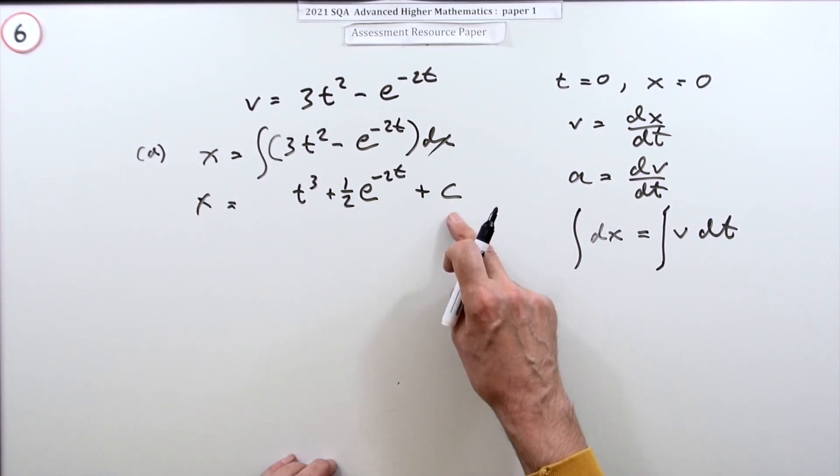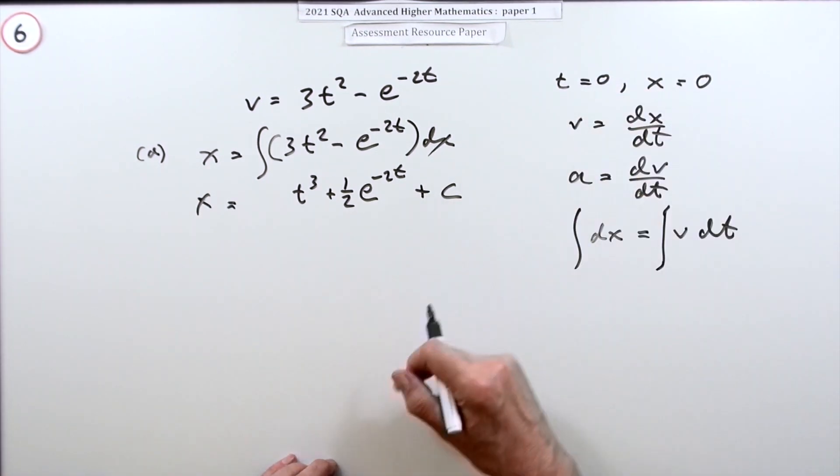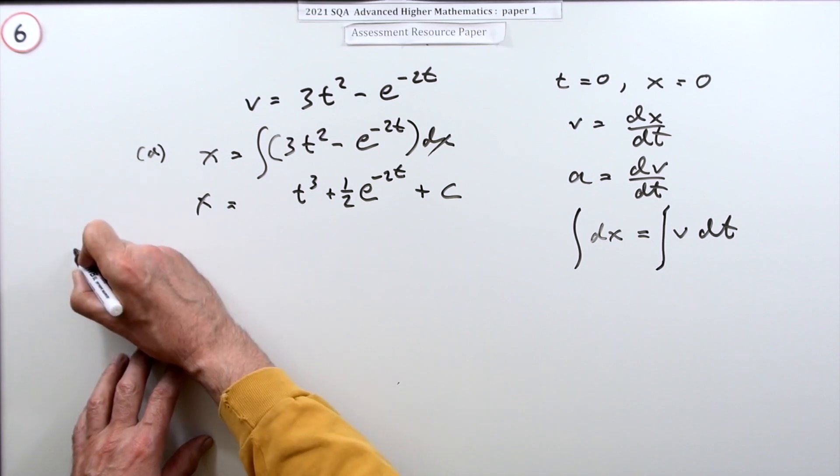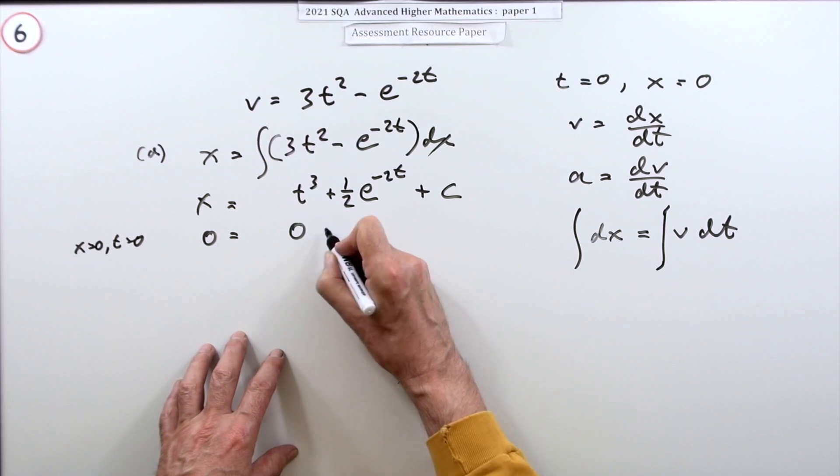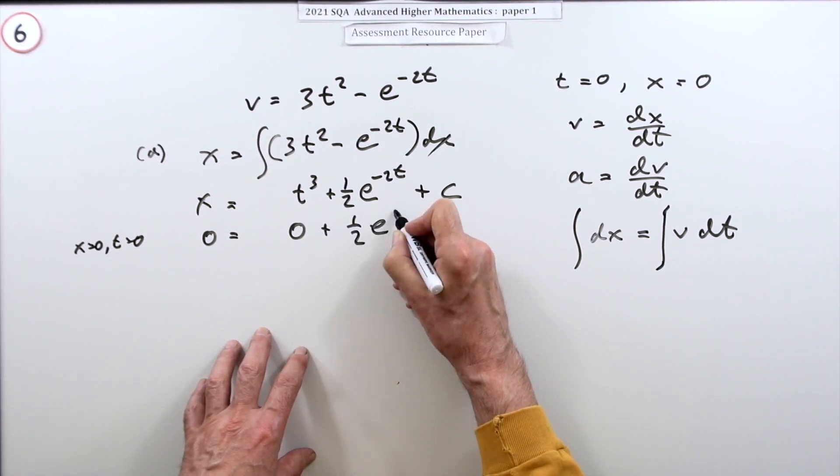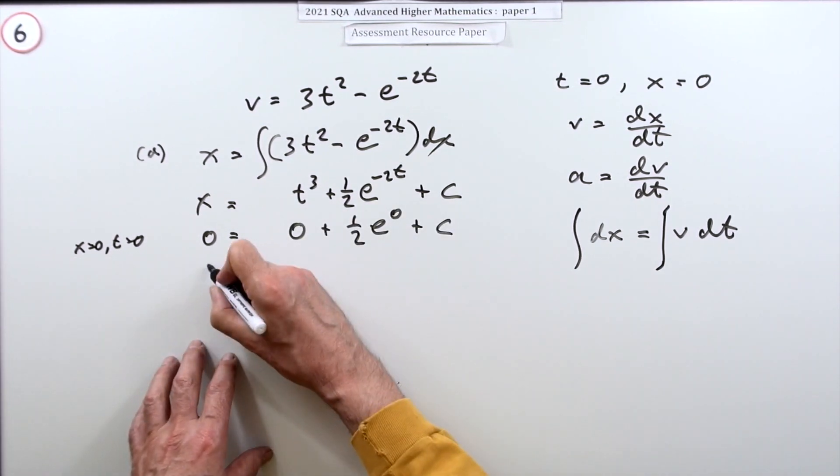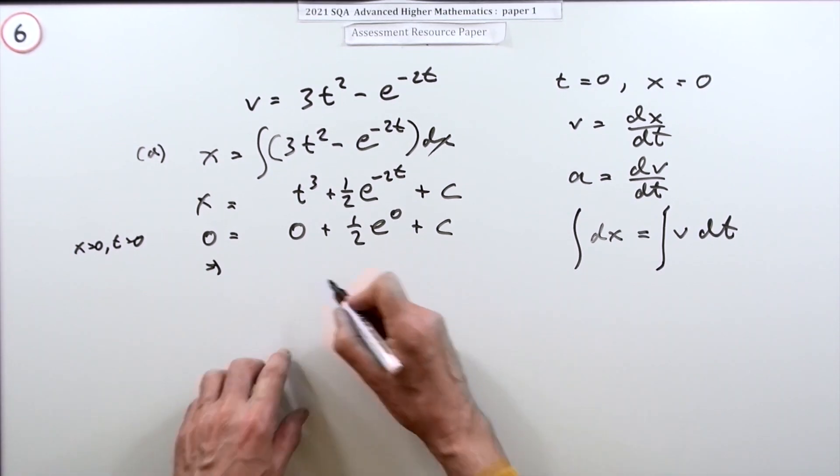That was the cost of doing it this way, but you can find that c because I've got this pair of values here. So I can just pop that pair of values in. x is zero when t is zero, so 0 = 0 + ½e^0 + c.